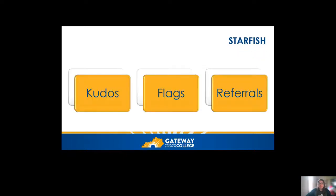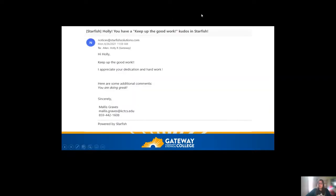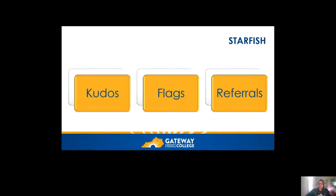There are three specific types of communications that Starfish deals with. The first one is a kudo — just like it sounds, it's a 'good job' or a pat on the back. Here's an example of an email you might get from Starfish. All emails from Starfish come from notices@starfishsolutions.com, and the subject will tell you exactly what the email entails — this one says 'You've done a great job, keep up the good work.'